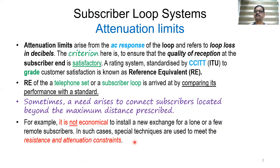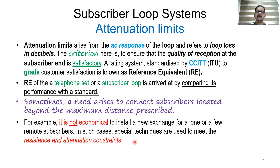Let us assume there are one or two subscribers, or very few customers, located remotely and far away with reference to the telephone exchange. To serve those few customers — maybe in the order of 3 to 10 — we cannot establish another telephone exchange because it is a costly proposition. We have to take cost into consideration while providing service. In such cases, we address this problem by special techniques to meet the resistance constraint referring to signaling limitations and attenuation constraints referring to attenuation limits.